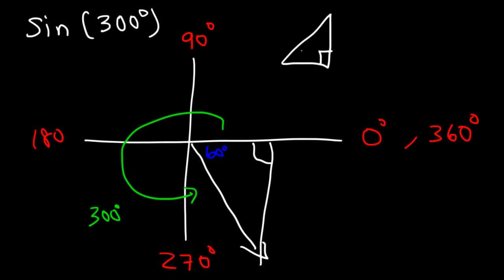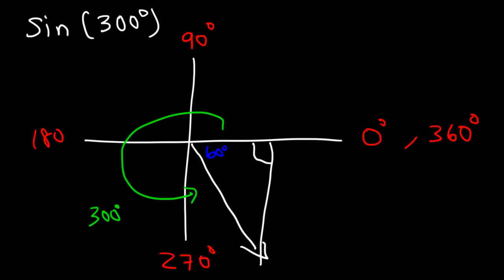You need to know your special right triangles — specifically the 30-60-90 triangle. Across from the 30 is 1, across from the 60 is √3, and across from the 90 is 2. Across from the 60 it's √3, but y is negative in quadrant 4. Across from the 30 is 1, x is positive in quadrant 4, and the hypotenuse is always positive at 2.